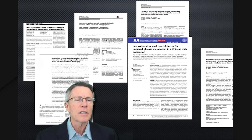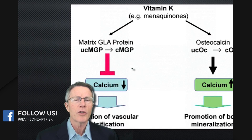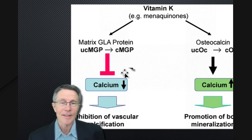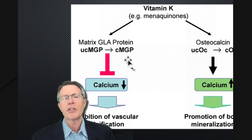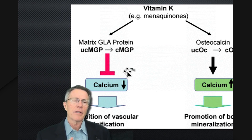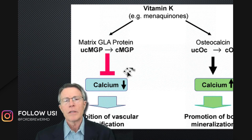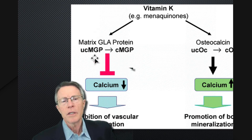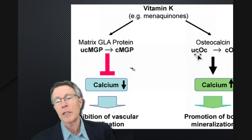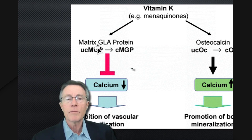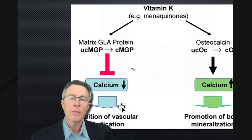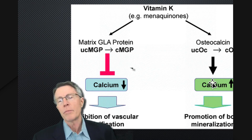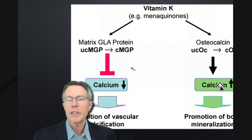Does osteocalcin ring any bells yet? To link it back to the first topic — vitamin K2 — remember we were talking about the mechanism: how can vitamin K2 impact both soft tissue like artery walls and hard tissue like bones? Well, it has to do with carboxylation — undercarboxylated MGP and undercarboxylated osteocalcin. With MGP, matrix GLA protein, once you carboxylate it you can inhibit vascular calcification. With bone, you can actually increase calcification of the bone by carboxylating and activating osteocalcin.